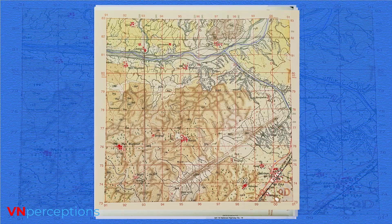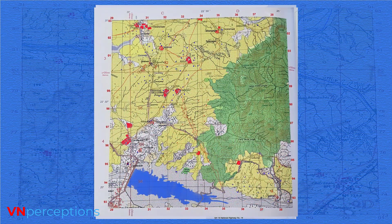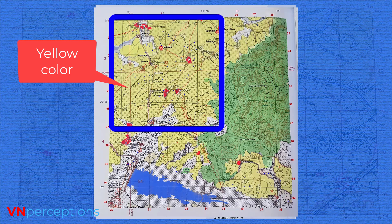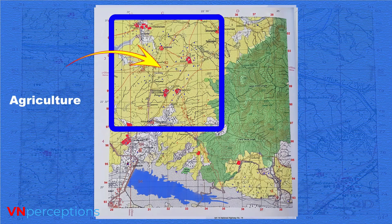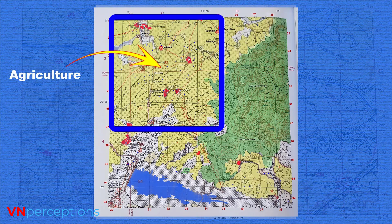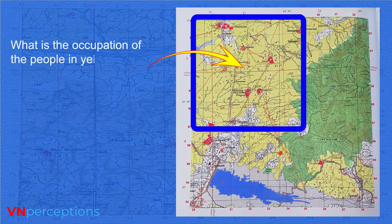When you carefully look at these topo maps, the first thing you will see is that the major part of the map is covered with yellow color, also called yellow wash. These are areas mainly used for agriculture. Whenever we see yellow color or yellow wash, it means this land is being used for cultivation. In exams, the question asked is: what is the occupation of people in the regions of yellow wash? The answer is cultivation.